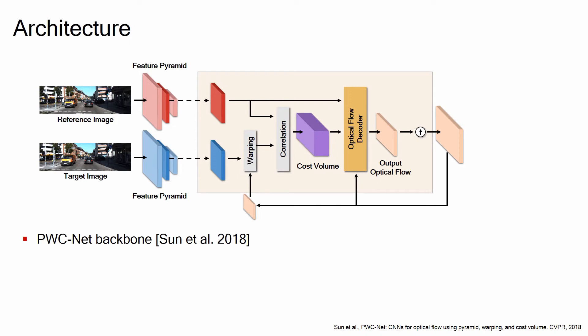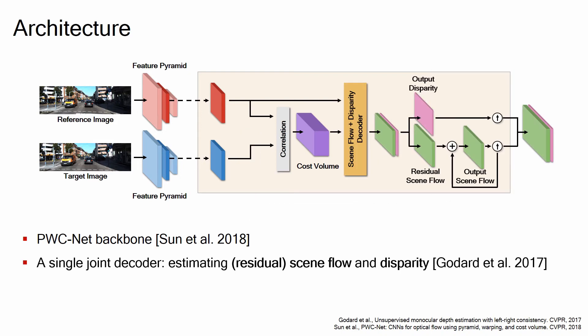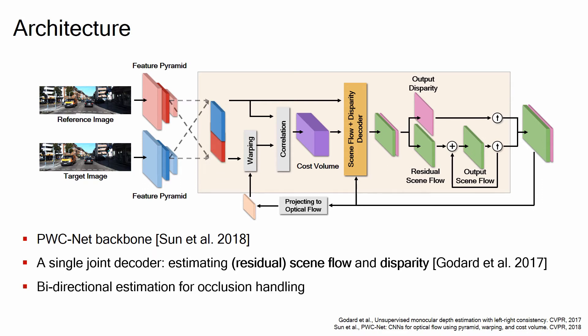Our network is based on RAFT-CNET, one of the state-of-the-art optical flow networks. We modify the decoder to estimate residual scene flow and disparity from the cost volume, which will be updated over the pyramid levels. For better accuracy, we exploit occlusion cues through bidirectional estimation by simply changing the order of the input.